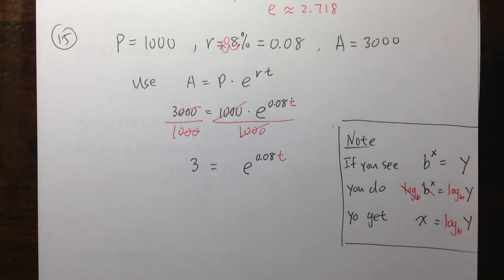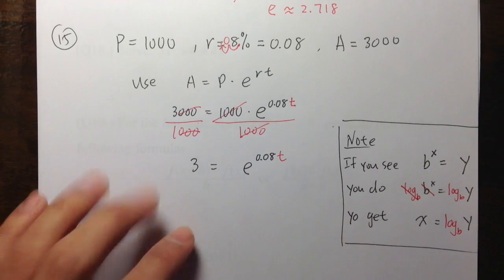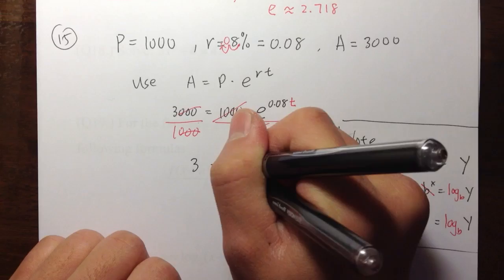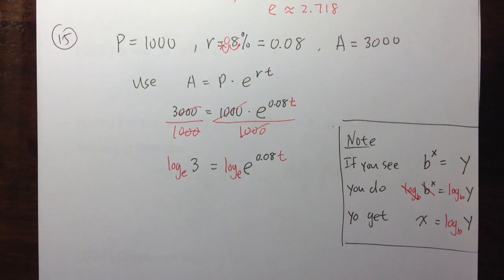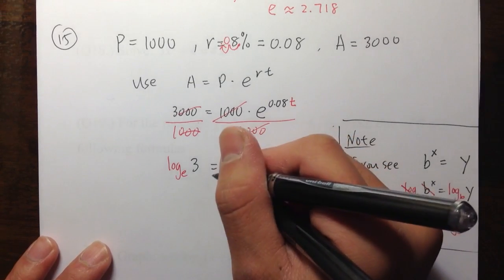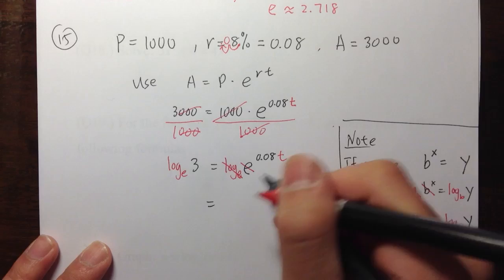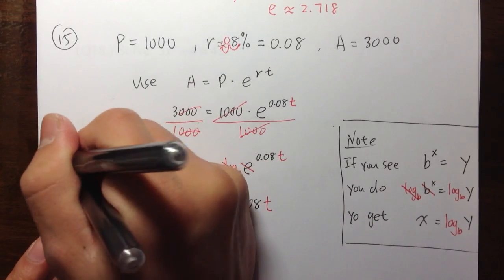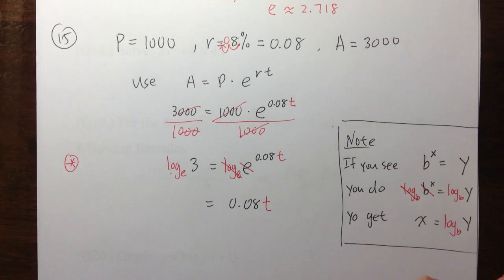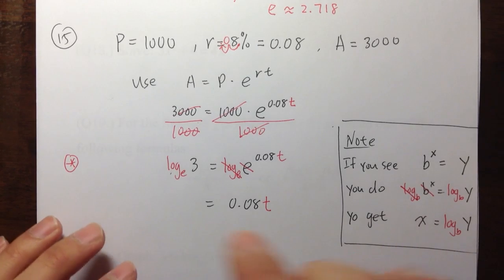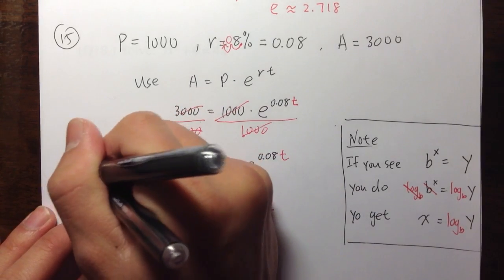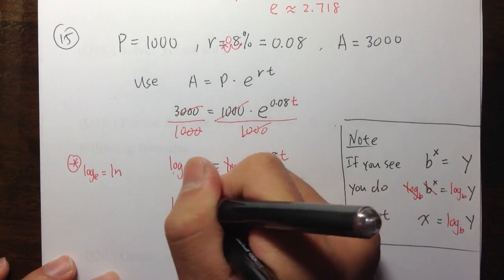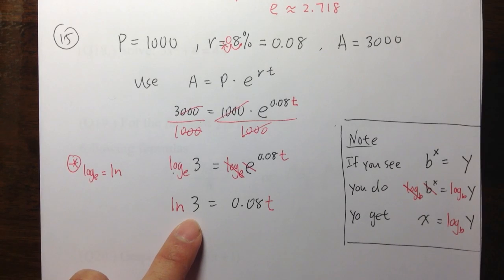In our case, e is the base, so we take log base e on both sides. Log base e and e cancel, giving us 0.08 times t equals log base e of three. Since e is a special number, the calculator has a dedicated button for log base e, which is the ln key. So this becomes ln of three.